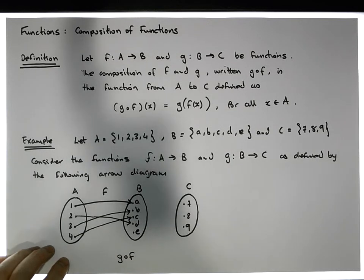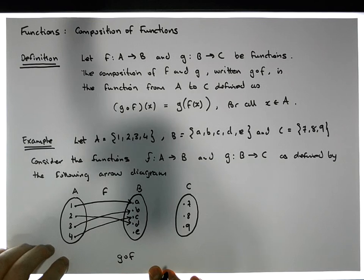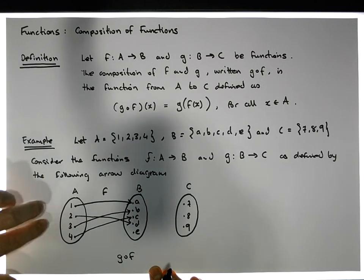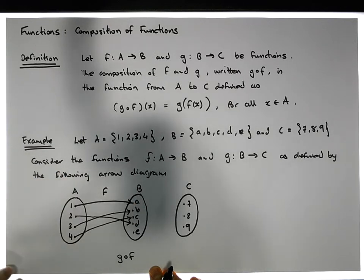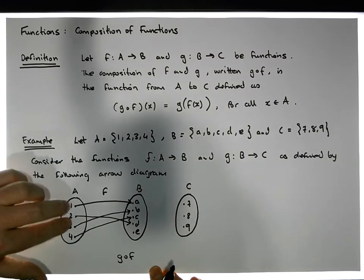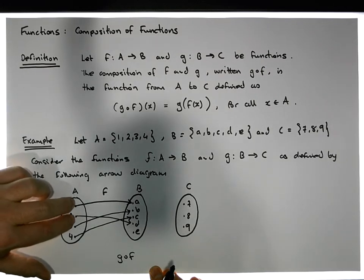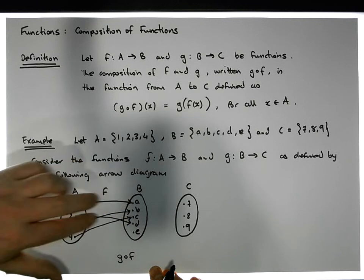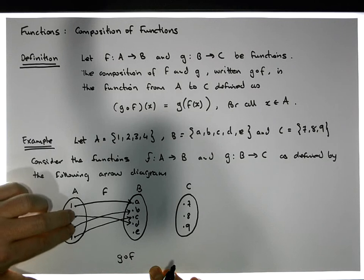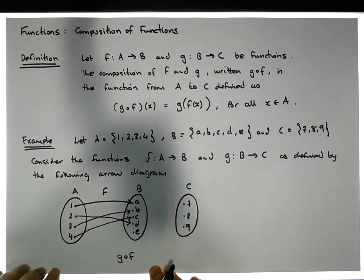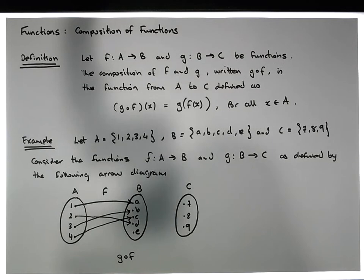What about the second condition? The second condition says that if I choose any two separate values from A, these values are taken to separate values in B — they're not taken to the same value. So you can see we're choosing these two values here, and you can see that they're mapped to two separate values. In all cases we have separate values mapped to separate values over in the set B. So f actually is a function.